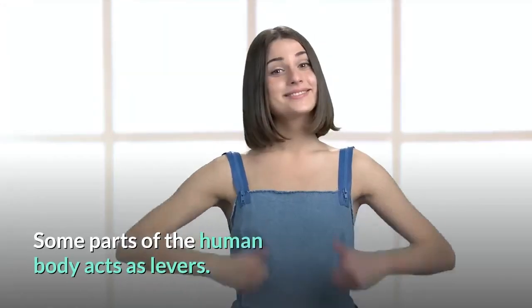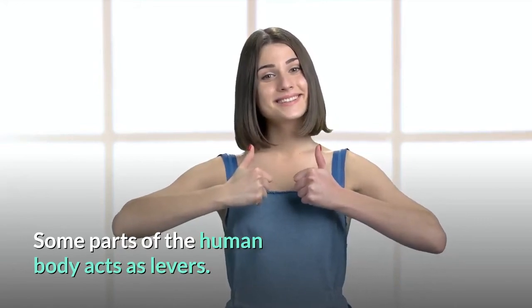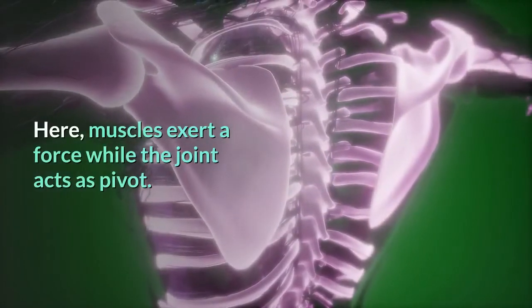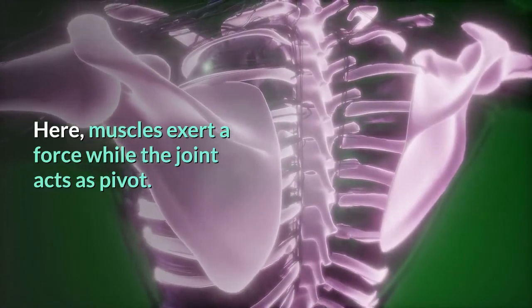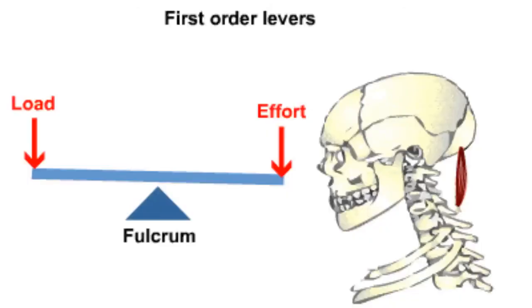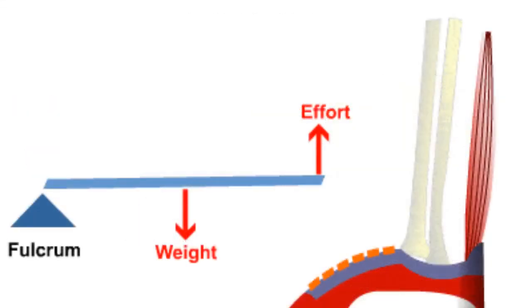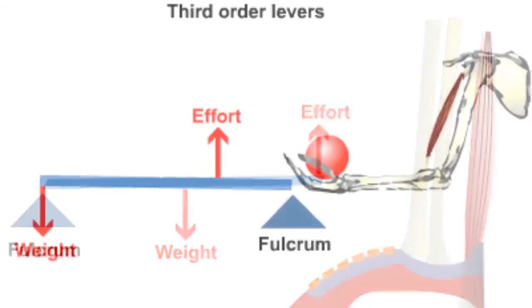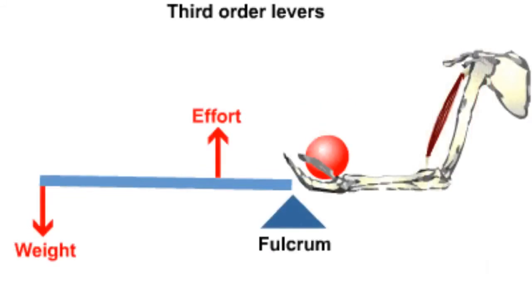Let us also look at some examples of levers in the human body. Some parts of the human body act as levers. Here, muscles exert a force while the joint acts as pivot. For example: first class lever action occurs at the neck, second class lever action occurs at the ankle, and third class lever action occurs at the arms.